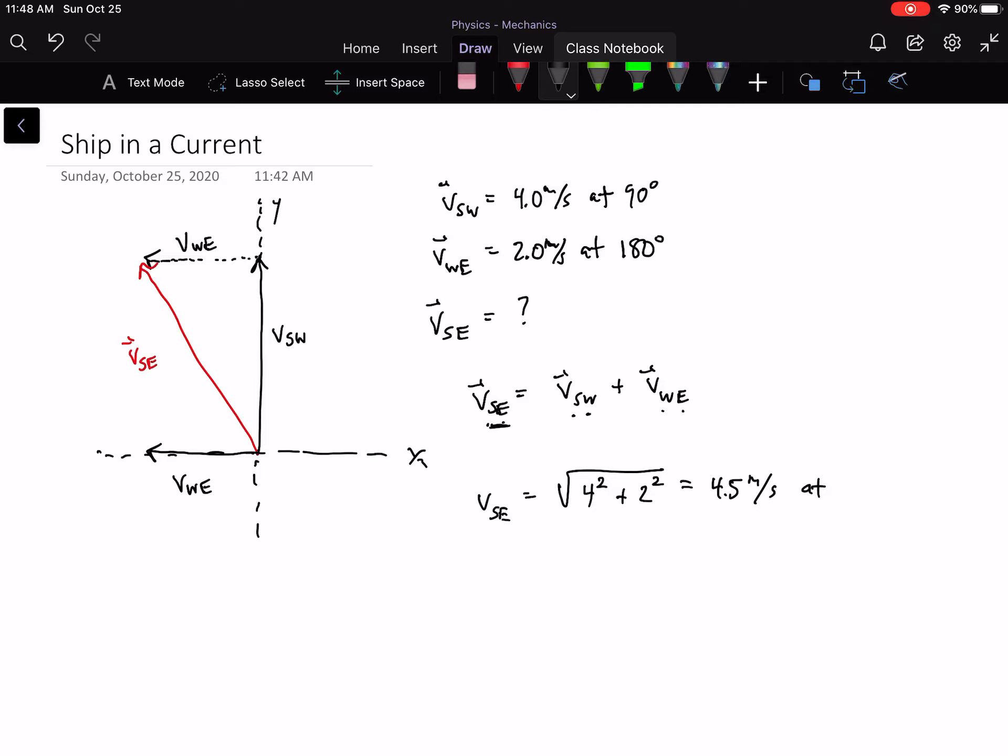If you plug all of that in, you should get about, or exactly, 120 degrees. Where that comes from is if you look at this angle right here, that phi is going to be the inverse tangent of 2 over 4, opposite over adjacent. That will give you 30 degrees.